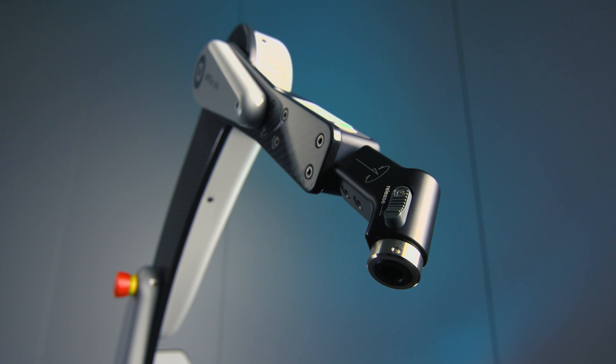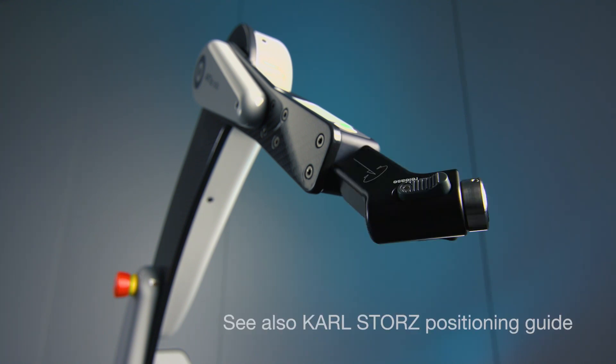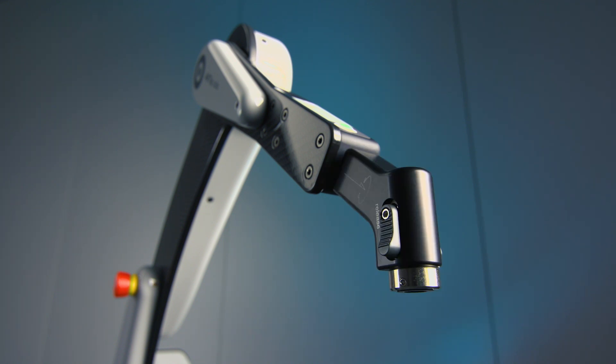To find the best position for your procedure, pull down and rotate the cantilever or swivel joint in 45 degree steps. See also the Karl Stortz positioning guide.